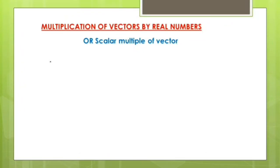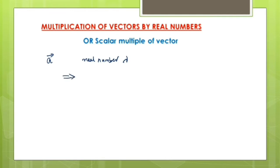In this video we will be dealing with the multiplication of a vector by a real number. Imagine A is a vector quantity. If you are multiplying with a real number — say lambda, where lambda is a real number — and you multiply it with vector a, we will be getting a new vector that is equal to lambda times vector a.